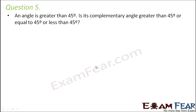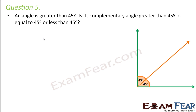Question number 5: an angle is greater than 45 degrees — is its complementary angle greater than 45 degrees, equal to 45 degrees, or less than 45 degrees? Let us look at this diagram. We have shown 45 degrees because two 45 degrees together make 90 degrees. For complementary angles, the sum of the angles should be equal to 90 degrees — that is the criteria for two angles to be complementary.